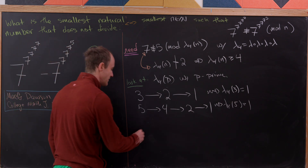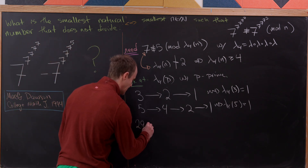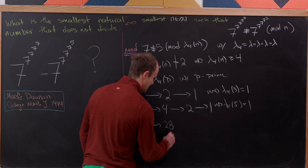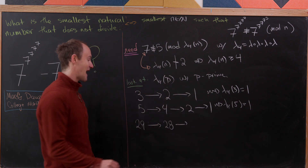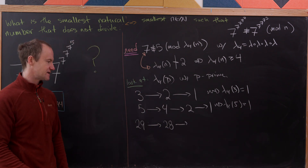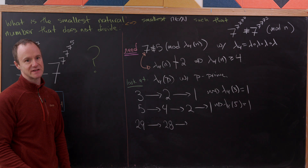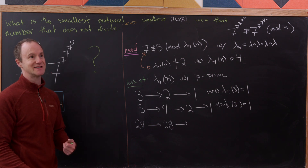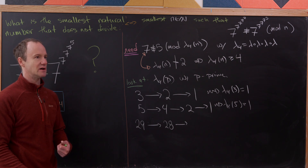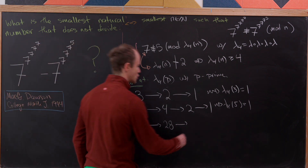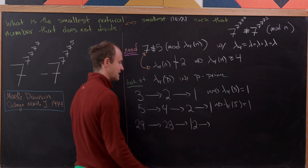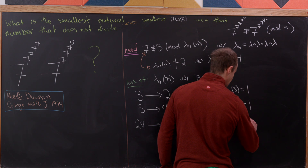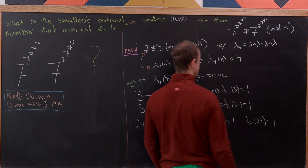Skipping ahead to p = 29: lambda of 29 = 28 = 4 × 7. Lambda of 4 is 2 and lambda of 7 is 6, so lambda of 28 = LCM(2, 6) = 12. Then lambda of 12 = 2, and lambda of 2 = 1. So lambda sub 4 of 29 is also equal to 1 — still doesn't work.